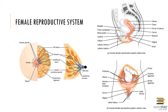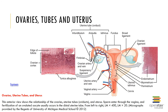The female reproductive system functions to produce gametes — an egg or ova — as well as nurture and protect the developing embryo. It also consists of gonads, ducts, and mammary glands. Let's look at the ovaries, tubes, and uterus first.